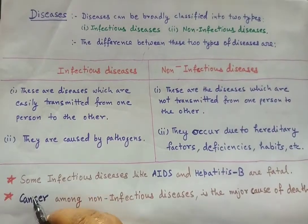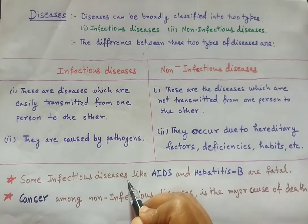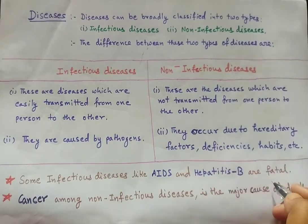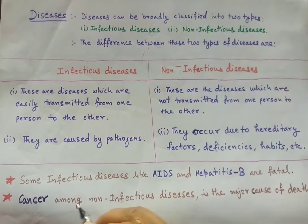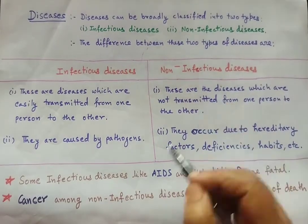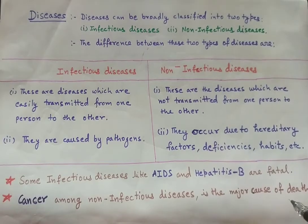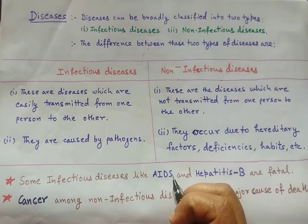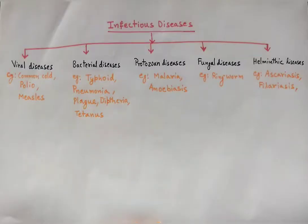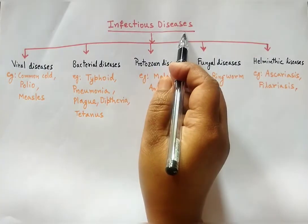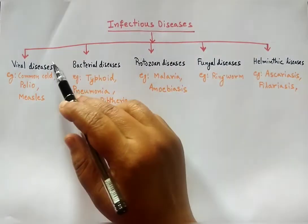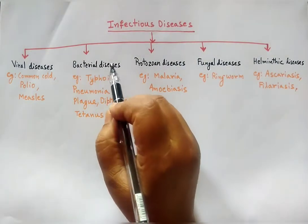Some infectious diseases like AIDS and hepatitis B are fatal, that is deadly. Among non-infectious diseases, cancer is the major cause of death. Infectious diseases can be divided into the following types: viral diseases, bacterial diseases, protozoan diseases, fungal diseases, and helminthic diseases.